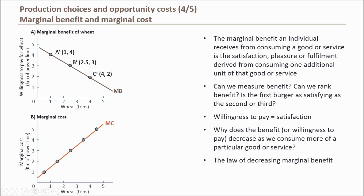This pattern of falling marginal benefit, or falling willingness to pay, can be seen by moving down the marginal benefit curve and looking at how many kilometres of power lines the economy is willing to give up as more wheat is being produced and consumed.